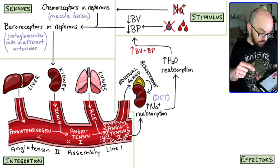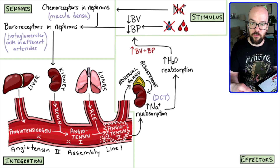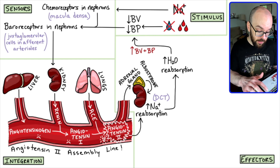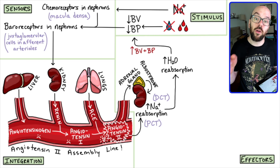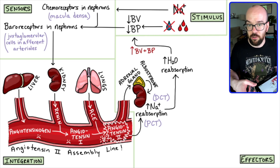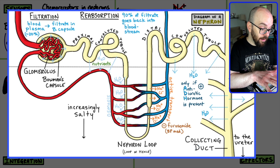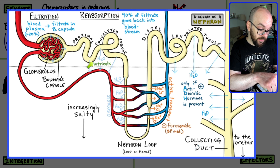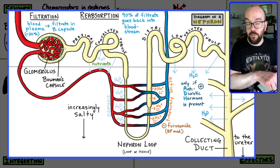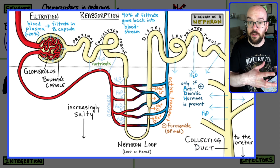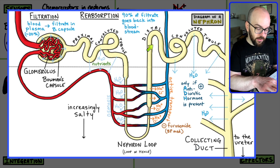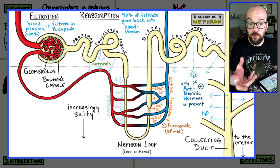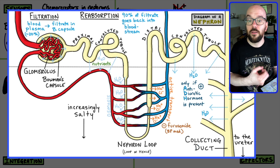Angiotensin II will also directly act on the nephron, bypassing the adrenal gland altogether. It's going to increase sodium reabsorption in a different spot — the proximal convoluted tubule — causing more sodium to be reabsorbed back into the kidney and therefore the bloodstream. So aldosterone is working on the distal convoluted tubule, and angiotensin II on the proximal convoluted tubule, and both of those together cause a lot more salt to get reabsorbed into the bloodstream.